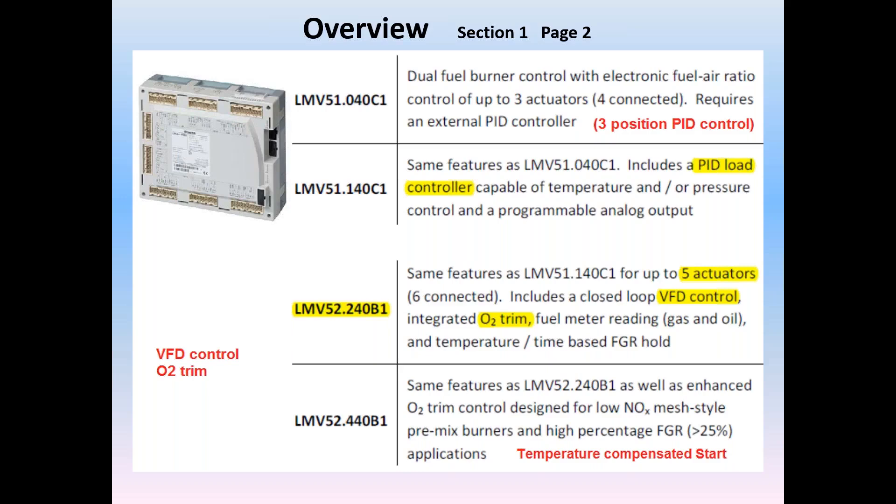Fourth and final is the LMV52440, which adds along with all of the above mentioned features, plus it includes a temperature compensated start. This feature was added for units that employ mesh style pre-mix burner heads. During pre-purge, the air temperature is measured, and the ignition settings are adjusted to compensate for the current temperature.